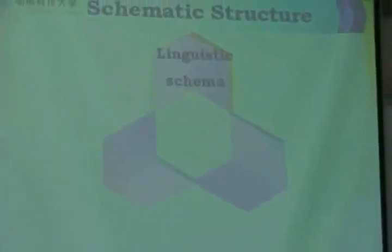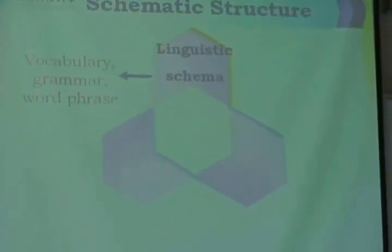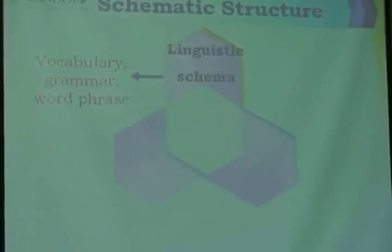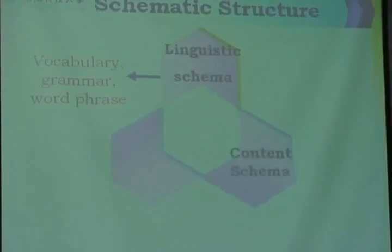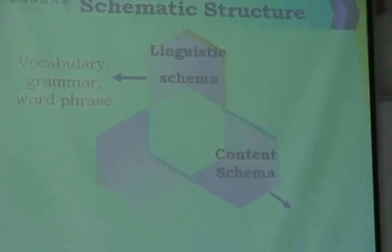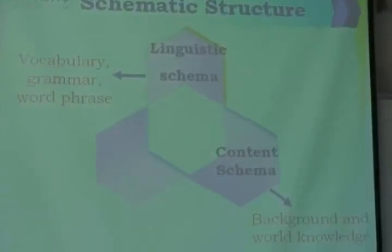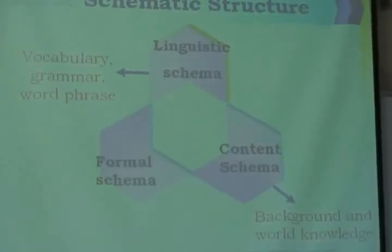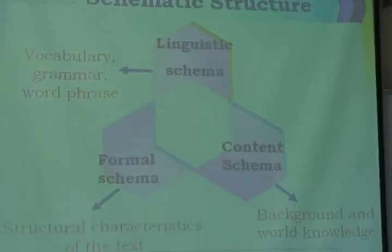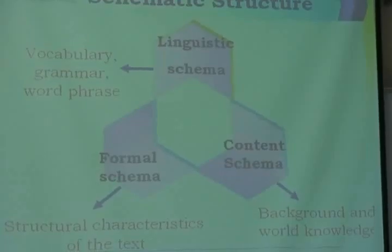The schematic structure is formed with three components. The first one is linguistic schema — it involves vocabulary, grammar, and word phrases. The second one is content schema — it involves the reader's background and world knowledge, and readers can use it to infer the context. The third one is formal schema — it involves structural characteristics of the text.